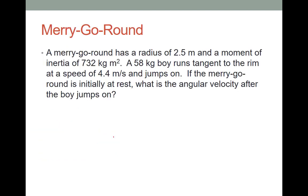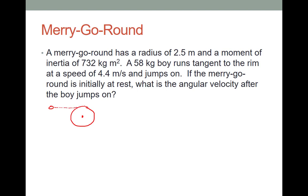For the last example, we're going to deal with a merry-go-round. We're given the radius and the moment of inertia of the merry-go-round, and then a boy runs tangent to the rim at a speed of 4.4 meters per second and jumps on. We're going to assume the merry-go-round was initially at rest. The easiest way to illustrate this is a top view: here is the merry-go-round, here is the boy, running straight to jump on the edge. Initially the boy has a momentum; after he jumps on, the merry-go-round rotates with the boy on it. Remember, initially the merry-go-round is not moving.